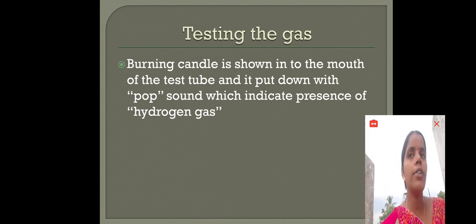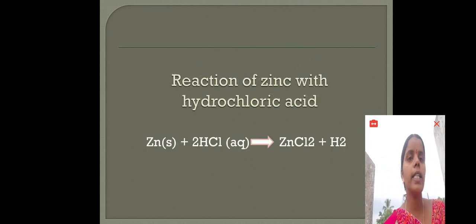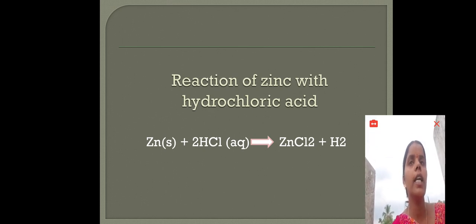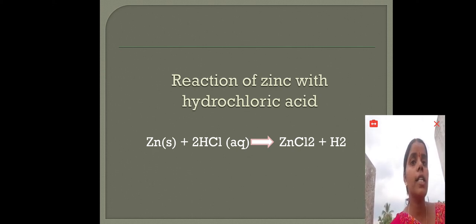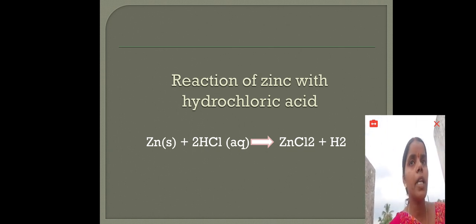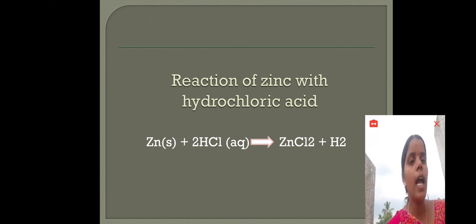The gas evolved here is hydrogen gas. We can test that gas by bringing a burning candle near the gas bubbles — the candle gives a pop sound and is put out. In this reaction, zinc and hydrochloric acid give rise to zinc chloride and hydrogen gas is evolved.